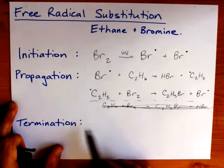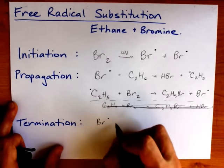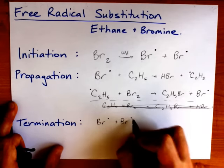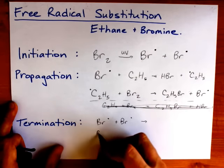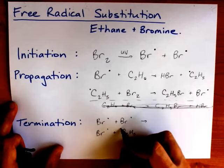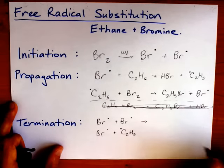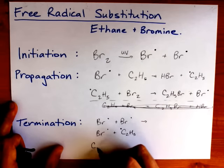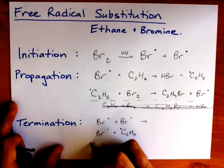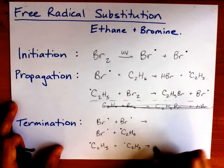How does the whole thing come to an end? Well that's a termination step. There are three possible terminations here, and they are the simple combinations of any two free radicals. Here we have a C2H5 radical reacting with the Br, I've got a Br reacting with another Br, and I could in theory get two C2H5 radicals reacting together.